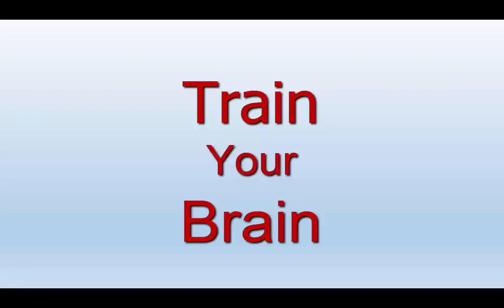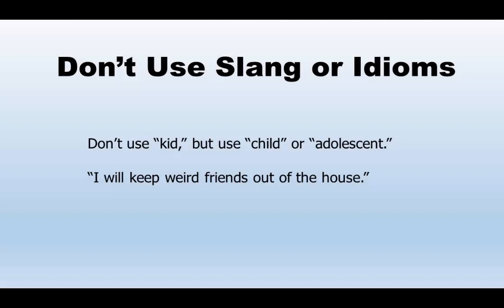As a part of diction, do not use slang or idioms. For example, don't use 'kid' — for academic writing, use 'child' or 'adolescent.' You see an example from a student paper: 'I will keep weird friends out of the house.' First, the tone isn't academic. The word 'weird' is slang, so tonally it's inappropriate. But it's also unclear — what is weird? My idea of weird might be different from yours. So the word choice doesn't work on at least two levels. I can't even correct this because I don't know what it means. But it's wrong for academic writing.